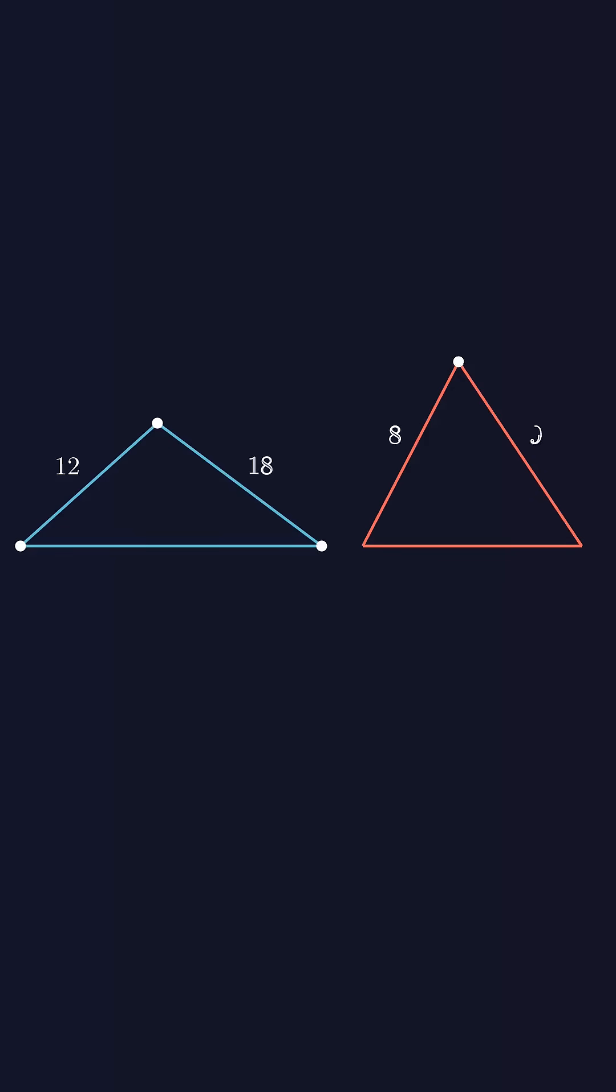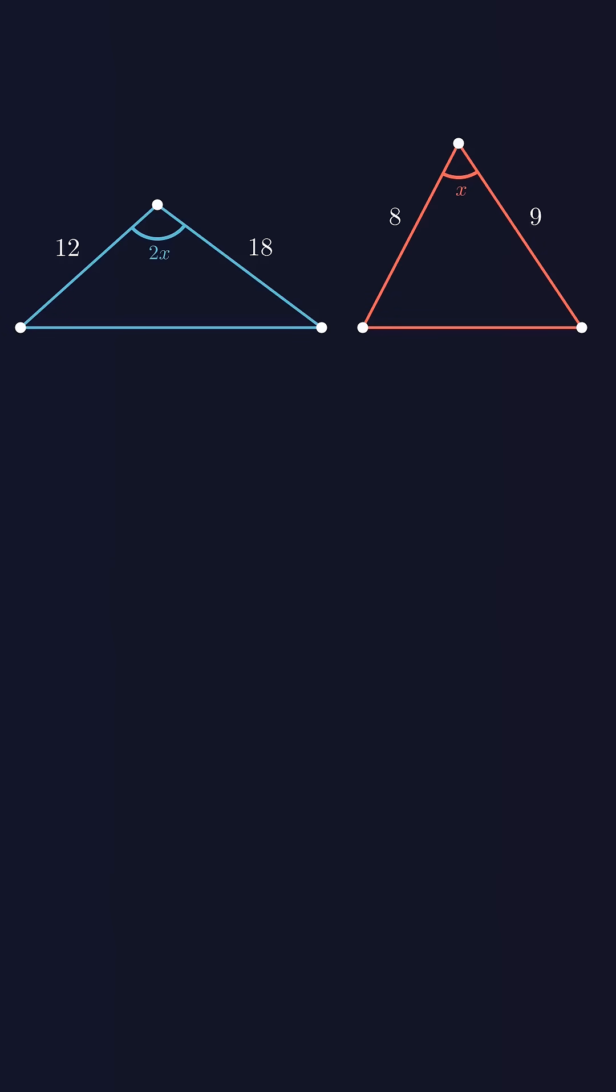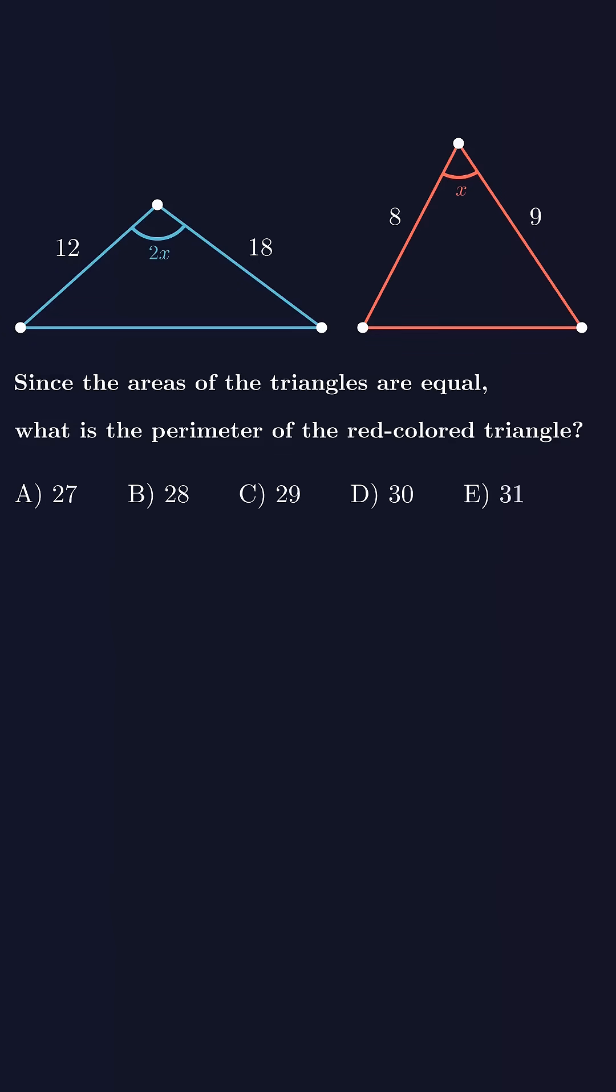I present to you a beautiful math question. Let's say we have two triangles, one red and one blue. Their side lengths and one angle are given. We're told that the areas of these triangles are equal, and we're asked to find the perimeter of the red triangle, so we need to find the unknown side.